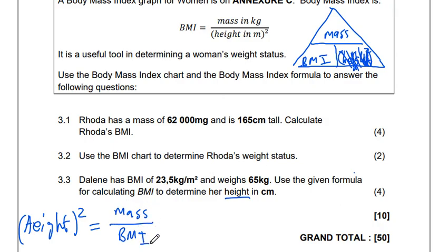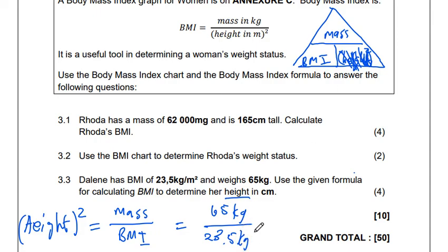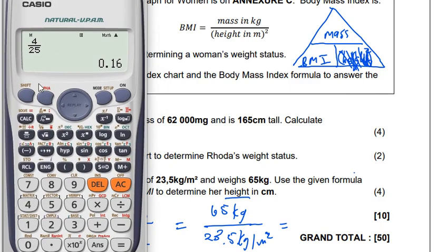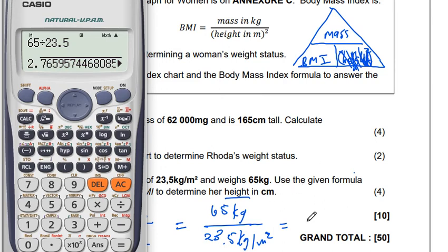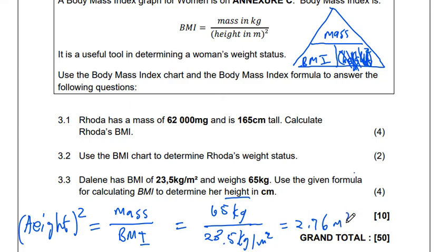We've got BMI at the bottom, then we calculate that, which is 65 kg divided by 23.5 kg per meter squared. From here we can get the answer: 65 divided by 23.5, we get 2.76 meters squared.